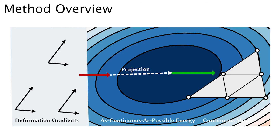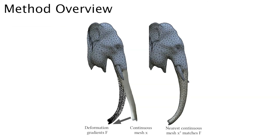Like most other physics simulation problems, EMU boils down to an energy minimization problem. However, the novelty in our framework is that we use the deformation gradients for each element as the degrees of freedom in the energy minimization, while visualizing the deformations on the nearest continuous mesh. The nearest continuous mesh is a continuous mesh whose elements most closely resemble the deformation gradient solved for by the energy minimization.